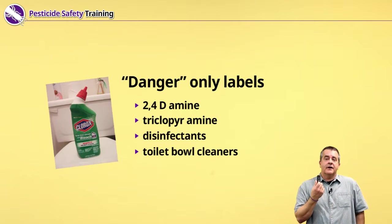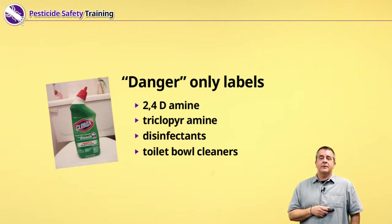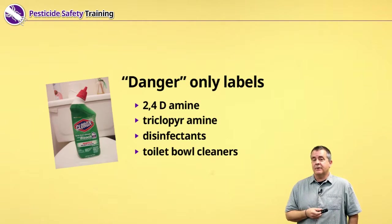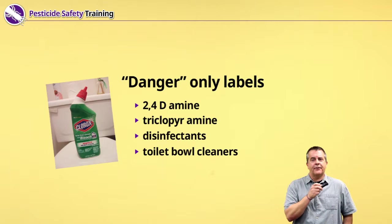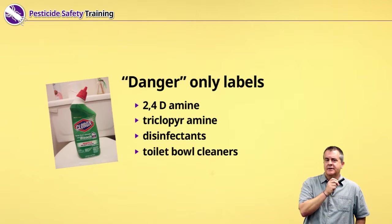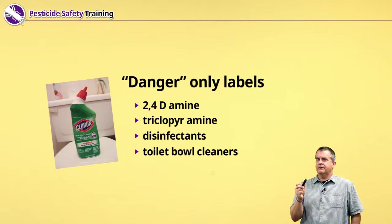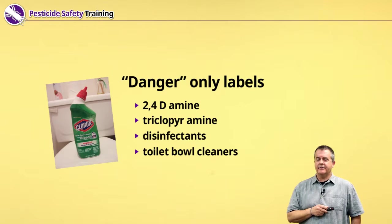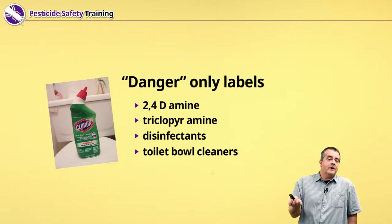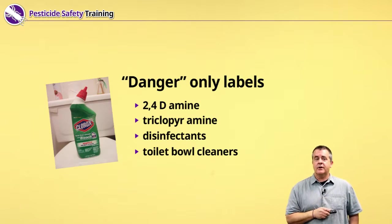Examples include herbicides like 2,4-D amine products or triclopyr amine products — triclopyr being the active ingredient in Garlon or Turflon. Weed B Gon 64 is a 2,4-D amine product. You'll see those herbicides have DANGER as a signal word, but not including POISON or the skull and crossbones — meaning eye and skin risk. Similarly, disinfectants and toilet bowl cleaners are also compounds caustic to your eyes. If you don't believe it, go home and look at your toilet bowl cleaner — it'll say DANGER and have a narrative description of the risk to your eyes.